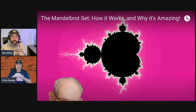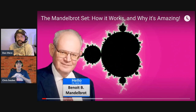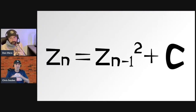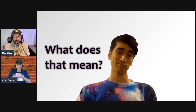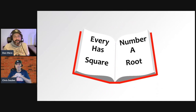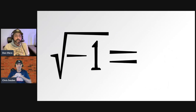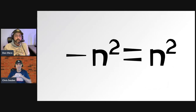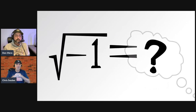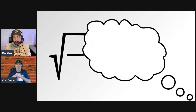The Mandelbrot set is a fractal discovered by Benoit B. Mandelbrot. It is generated with a recursive formula on the complex plane. Let's start from the basics. Every number has a square root — wrong. Negative one has no real square root because a negative number squared is always positive. Its square root must be imaginary. The square root of negative one is an imaginary number we call i.